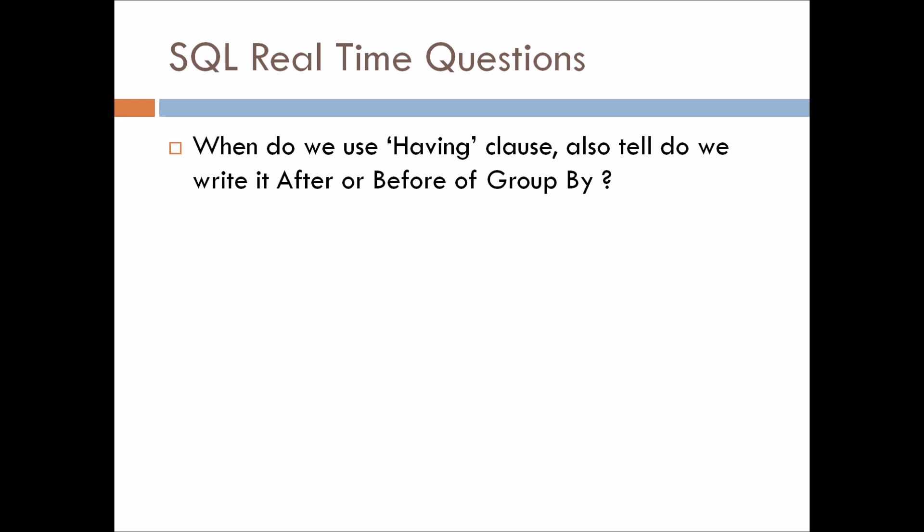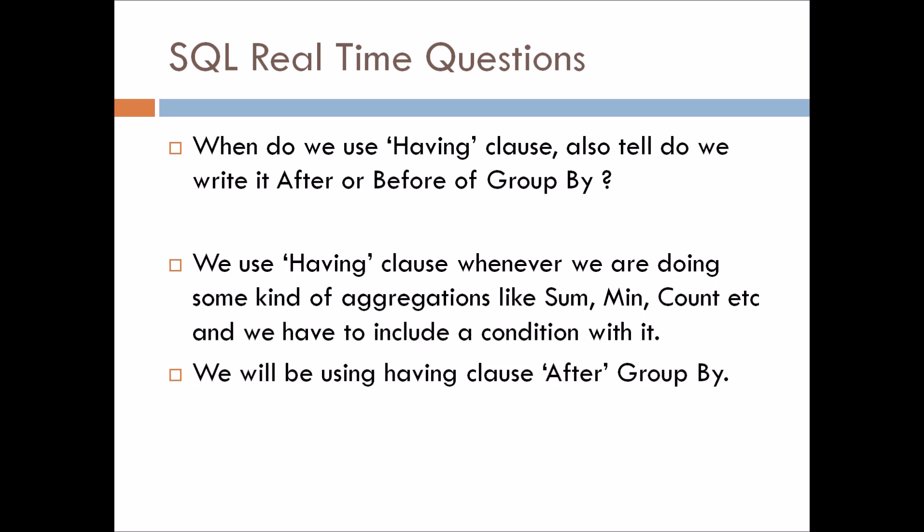When do we use the having clause? Also, do we write it after or before group by? We use the having clause whenever we are doing some kind of aggregations like sum, min, count, etc., and we have to include a condition with it. In that case we use the having clause. And we use the having clause after group by, not before.